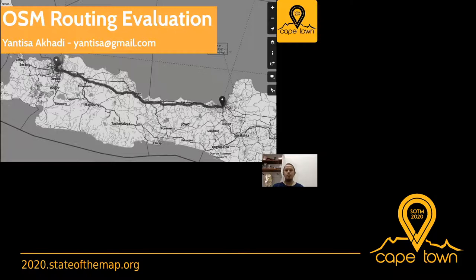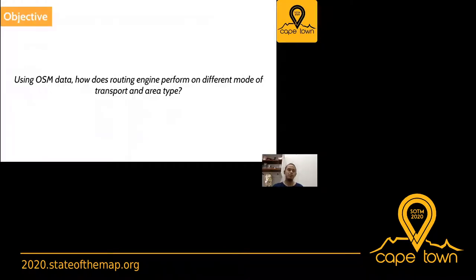In this talk, I will focus more on how, if you're using OSM data, what's the result of different routing engines using the same data, using the same starting point, using the same endpoint, on different modes of transport like walking, by car, or by other modes of transport, and also by area type.